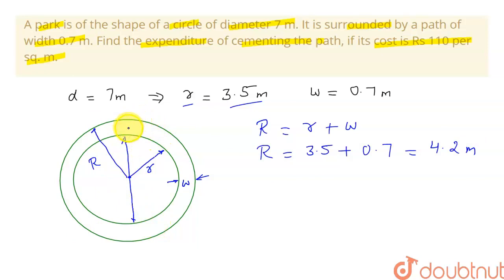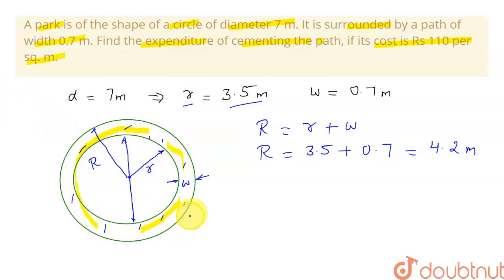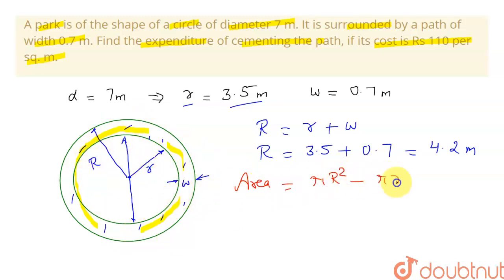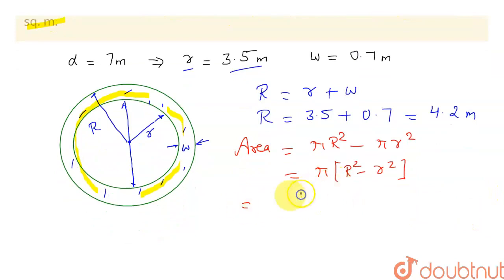This is the park, and this surrounding ring is the road. We have to find the expenditure of cementing this path, so first we need to calculate the area of the road. The area equals the area of the outer circle minus the area of the inner circle: pi × R² minus pi × r², which simplifies to pi × (R² − r²).